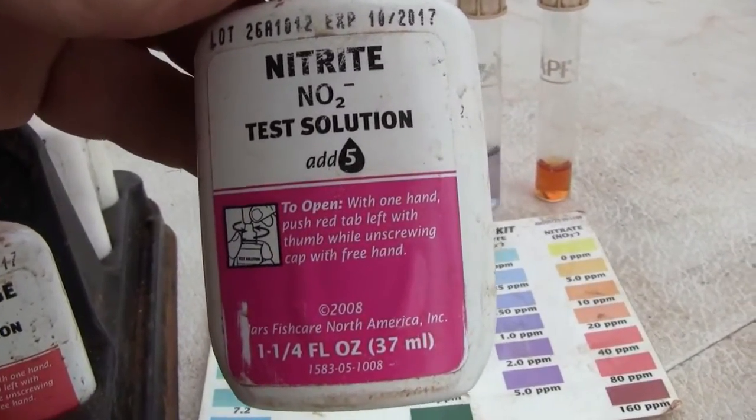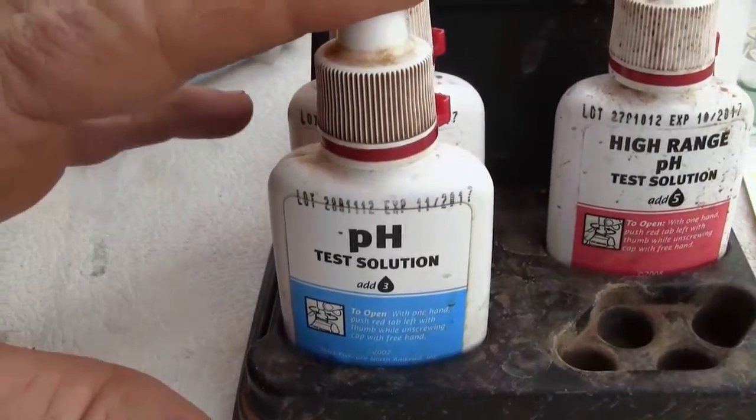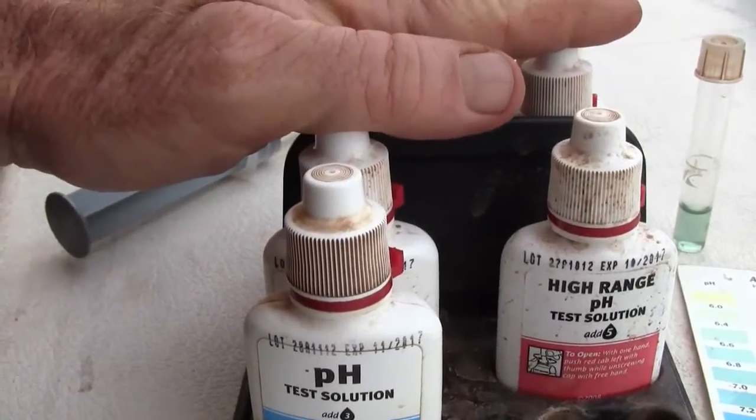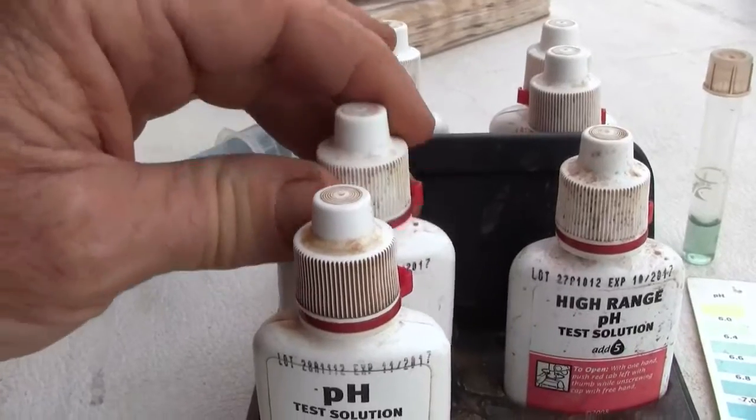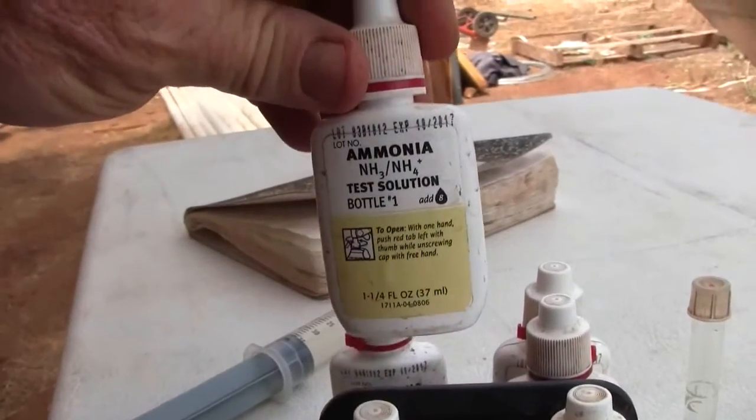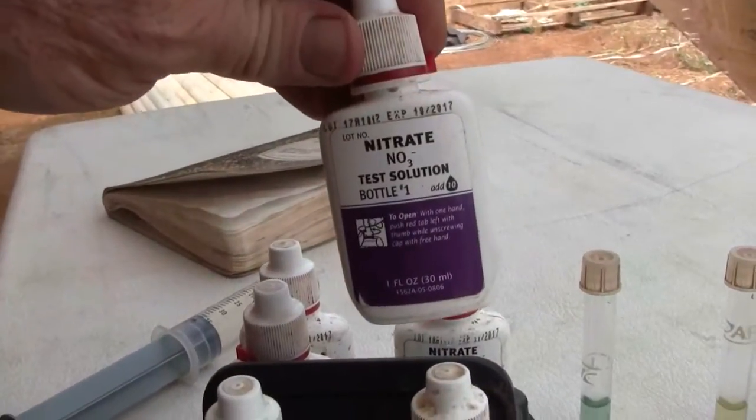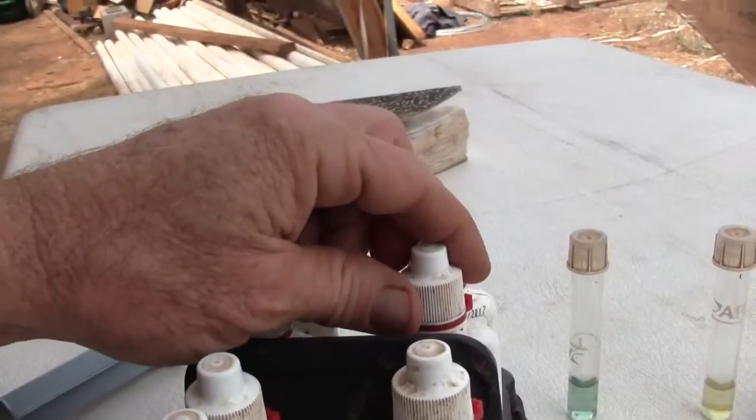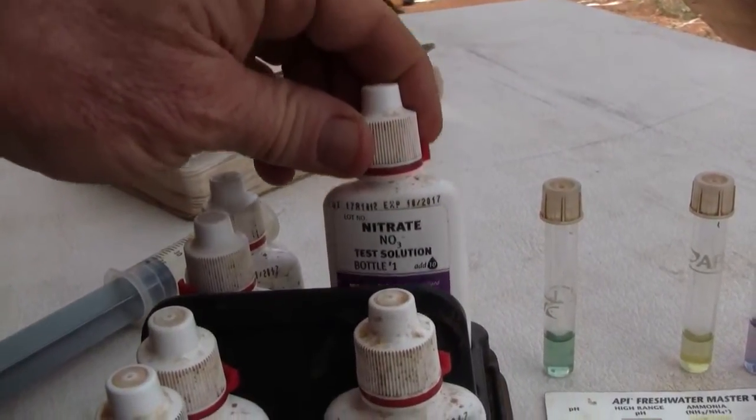What I do is I add one drop on the pH solution and two drops of each of the others. Rather than adding five drops I add two. Rather than adding eight drops for ammonia I add two. Rather than adding ten drops for nitrate I add two drops. That means I put in two tenths of the amount of water which is one fifth.